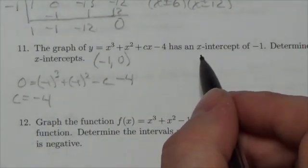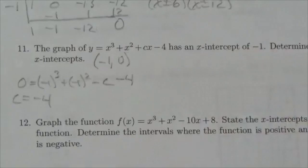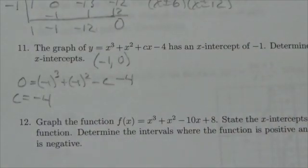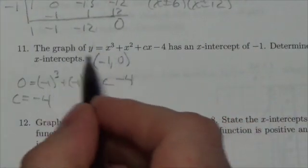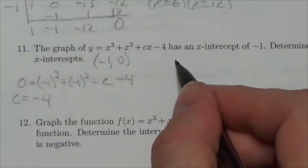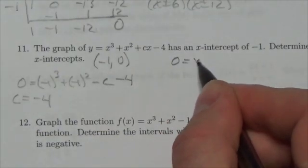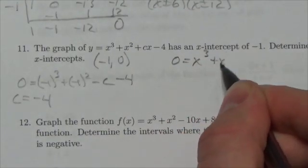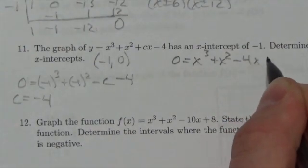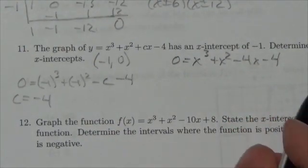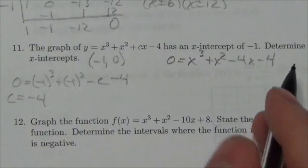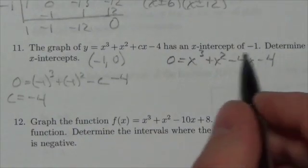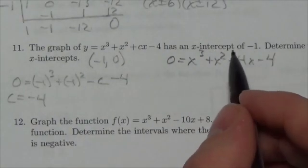Now, I also know that there's an x-intercept of negative 1. I know that if I set this function equal to 0, okay, if I set this equal to 0 right now, so I get x cubed plus x squared minus 4x minus 4, okay, I know that this has got an x-intercept of negative 1 here.